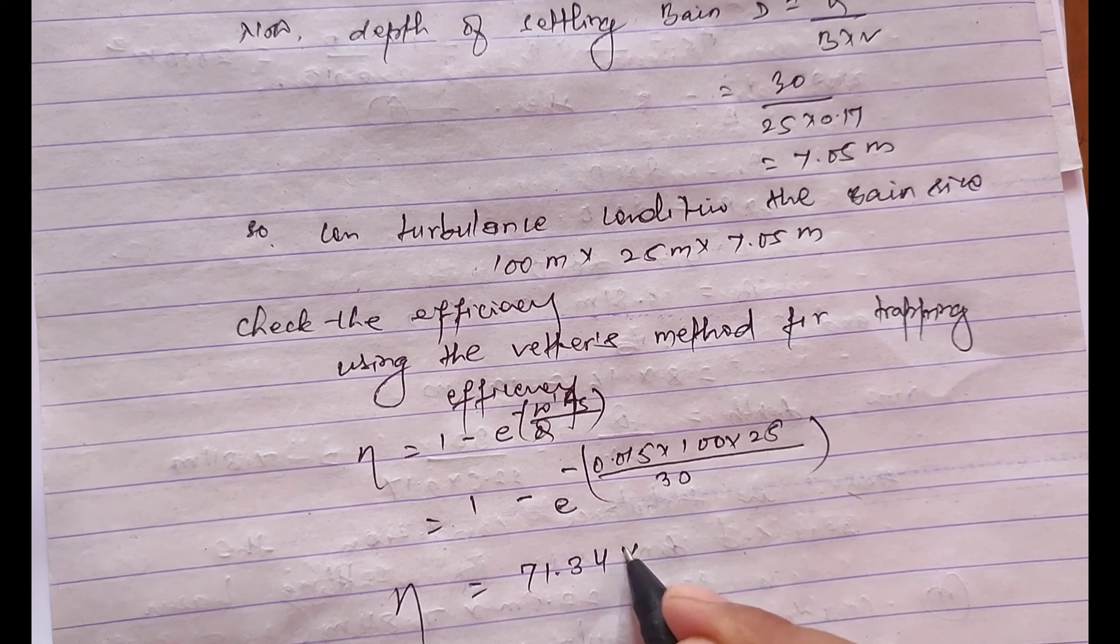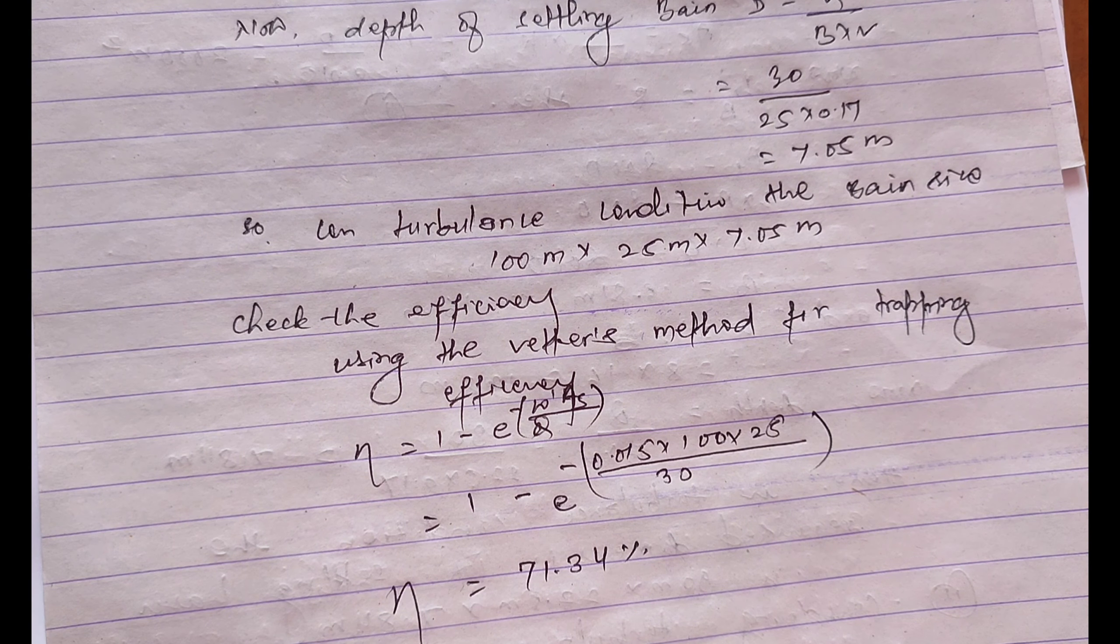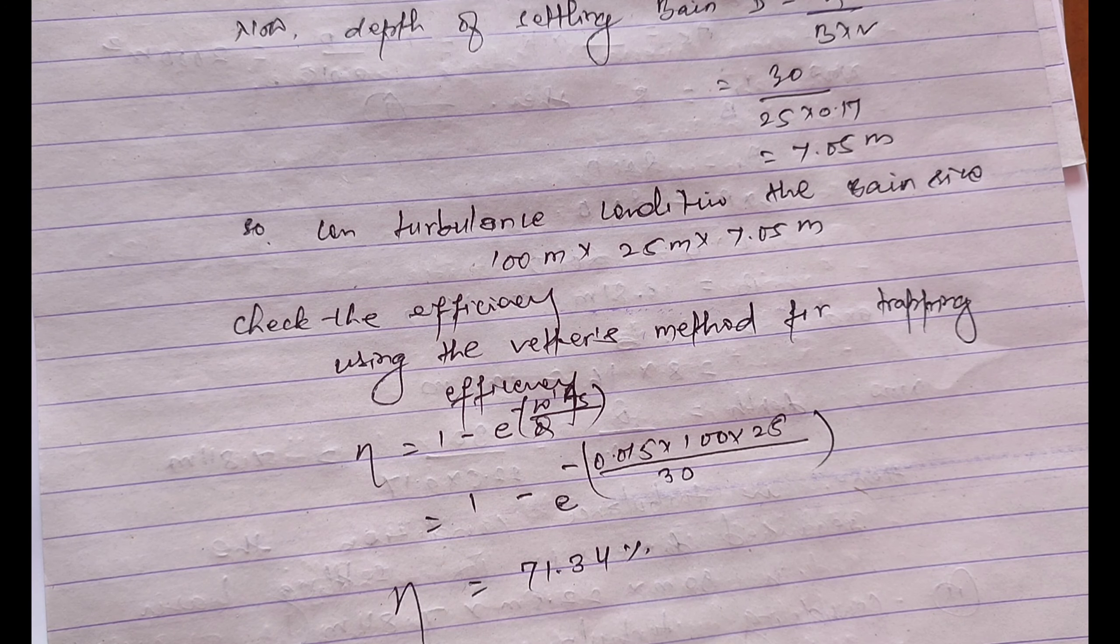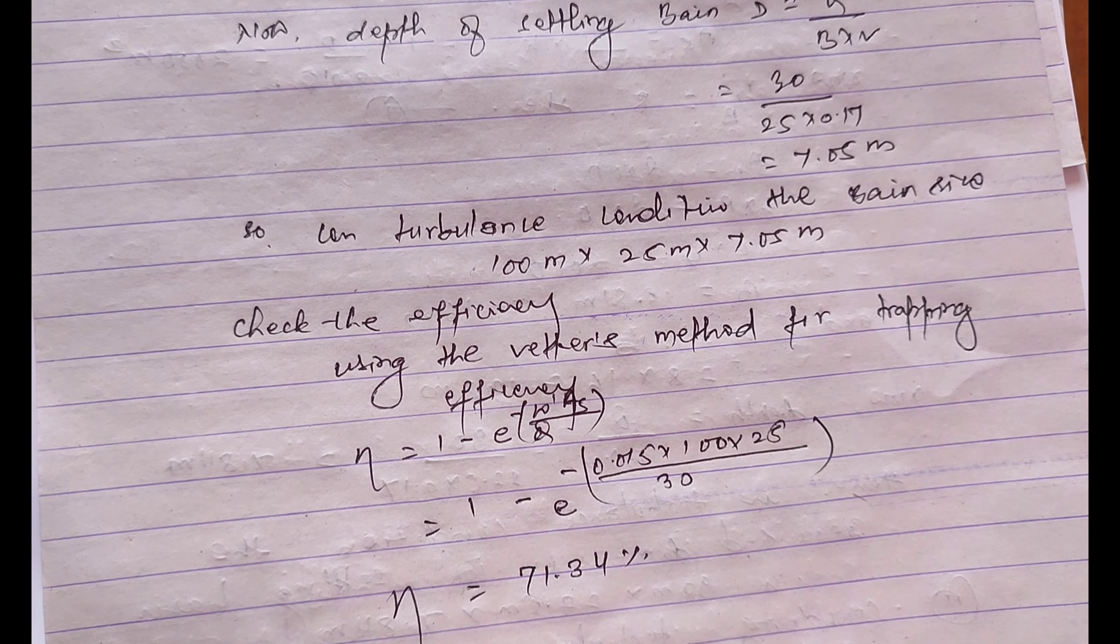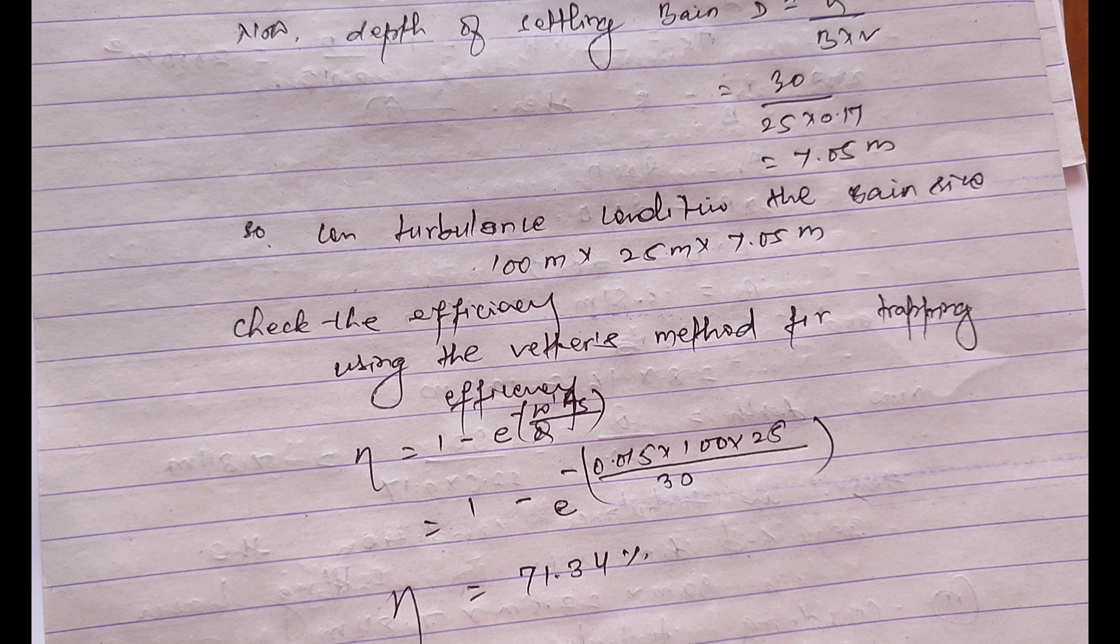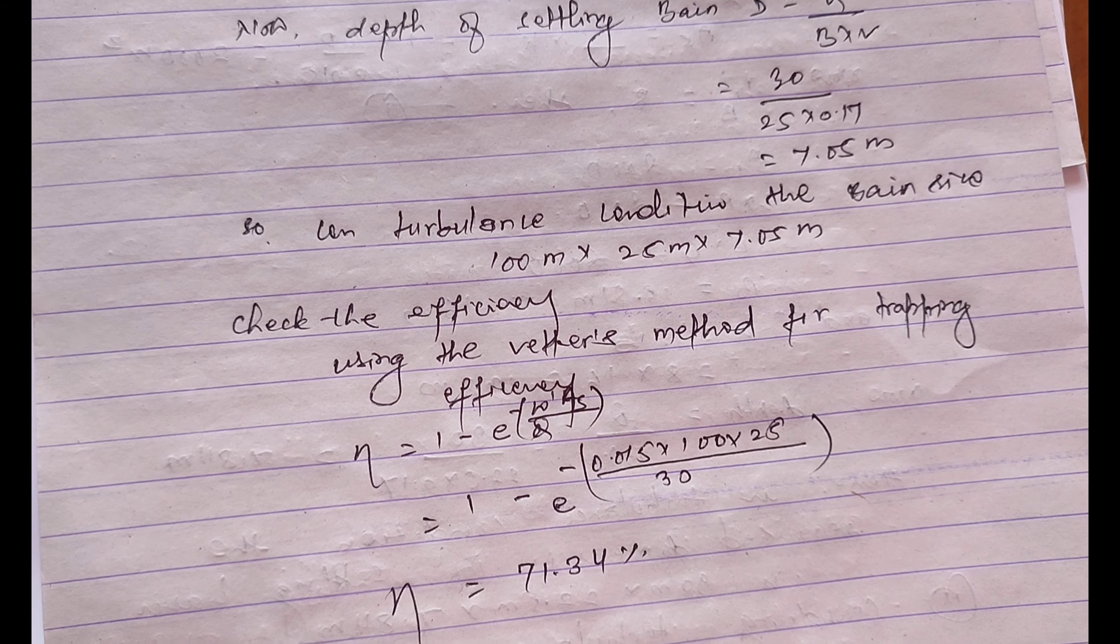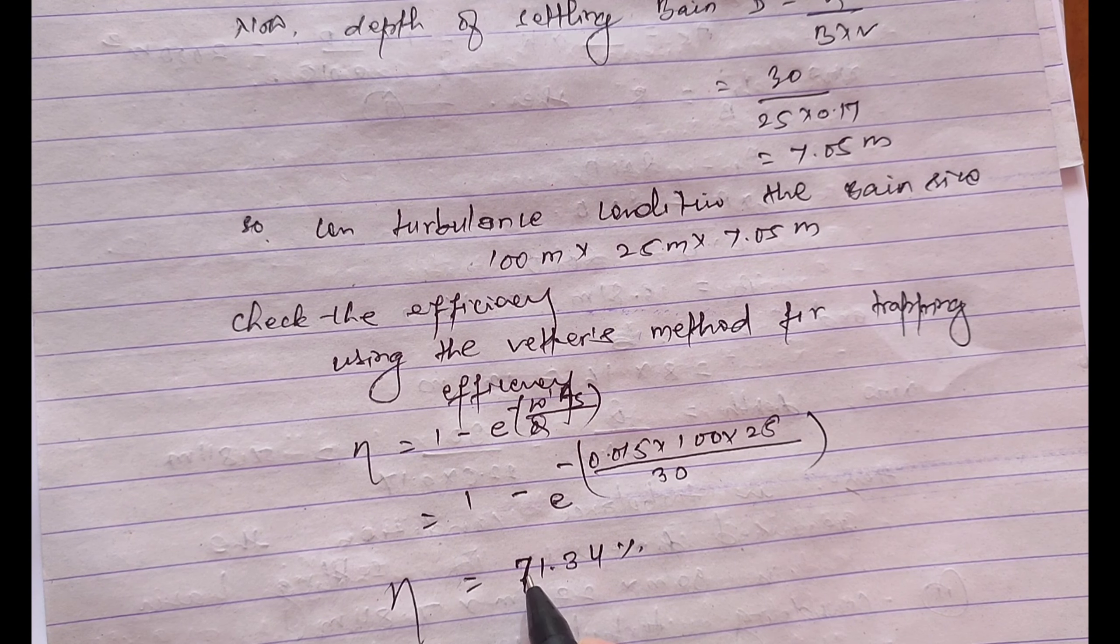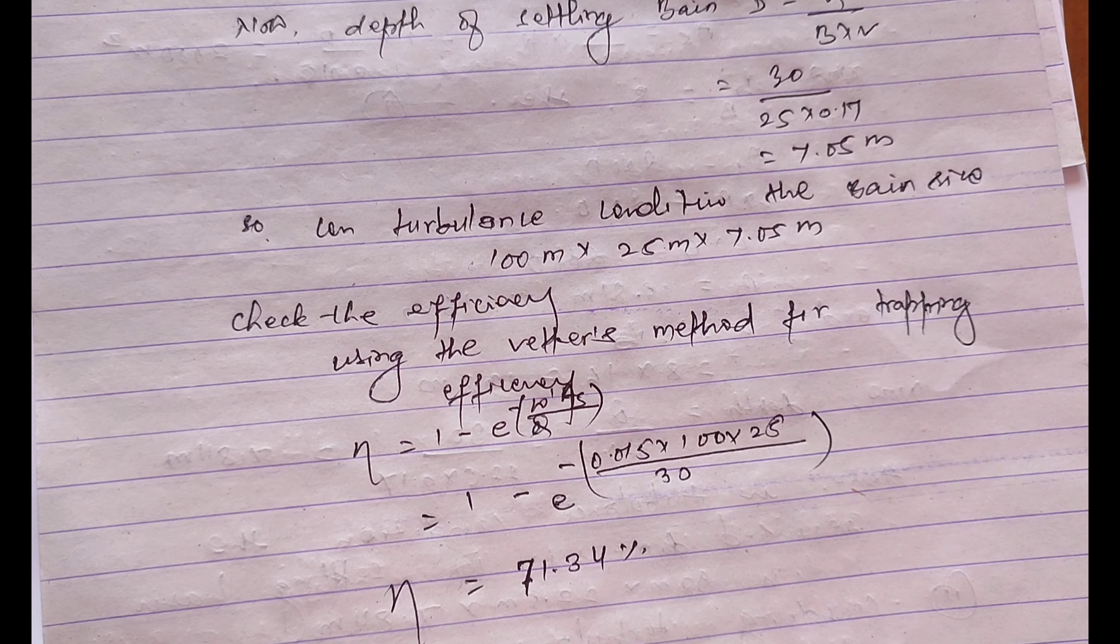So a settling basin having the length 100 meter and the width 25 meter with the discharge 30 meter cube per second, in such case the sediment will be settled is only 71.34 percent. So in this case if the desired percentage of the settled particle is within the limit the design is okay, otherwise we have to repeat the procedure by changing dimension until desired efficiency is obtained. If this is not the desired efficiency then we have to repeat all these steps again.